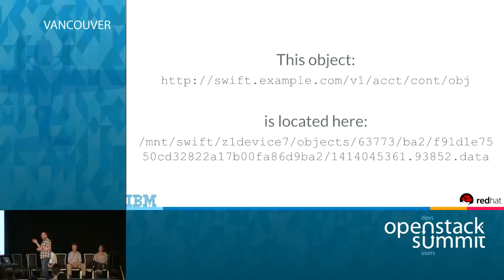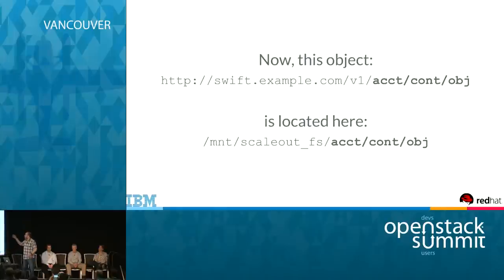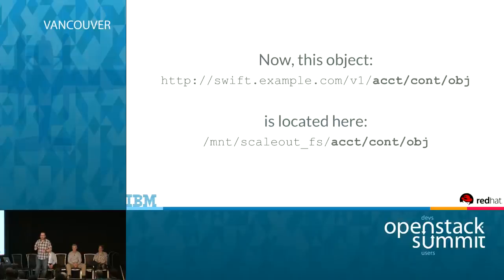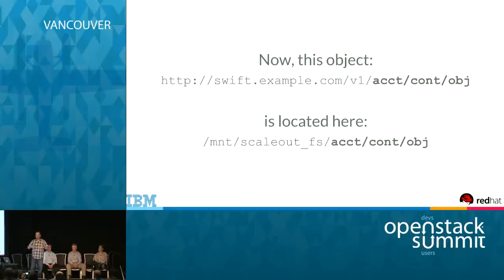What Swift on file does is simply copy the object verbatim, create the appropriate directories, and place the data on the file system. You're probably wondering how Swift on file handles replication and keeps data safe. Swift on file doesn't do that itself — it passes that responsibility on to the cluster file system and leverages the technology of those file systems to keep your data safe.